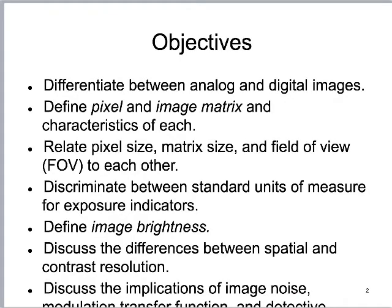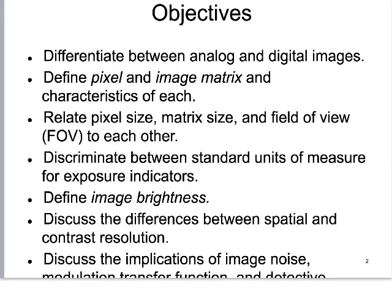Here are the objectives I've determined for us to look at today. Sorry the slide cut out here, but we'll talk about the difference between analog and digital. We'll look at pixels and image matrixes, matrix size and field of view, how these influence image quality. We'll look at different standards for measuring exposure indication, image brightness, contrast, spatial resolution, and image noise. The objective that got cut off covers modulation transfer function, detective quantum efficiency, and exposure latitude.